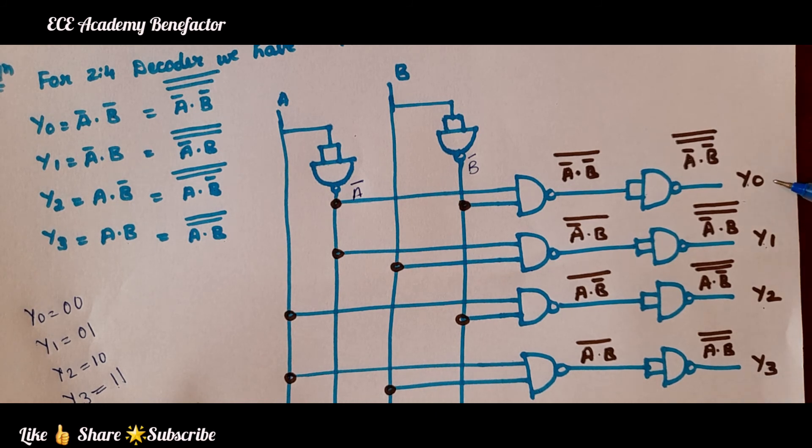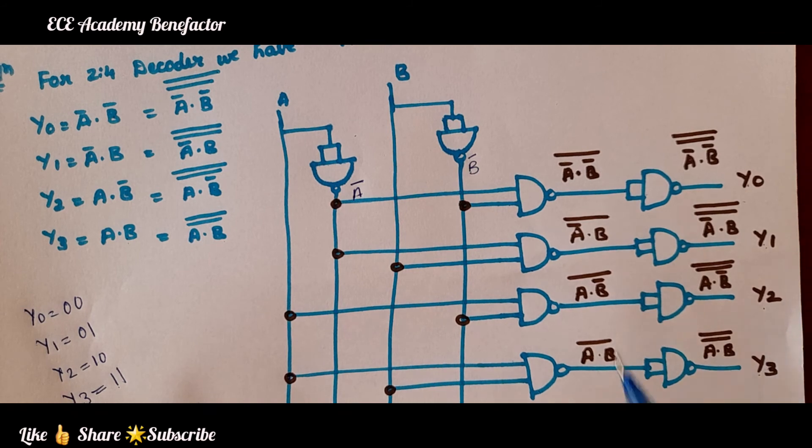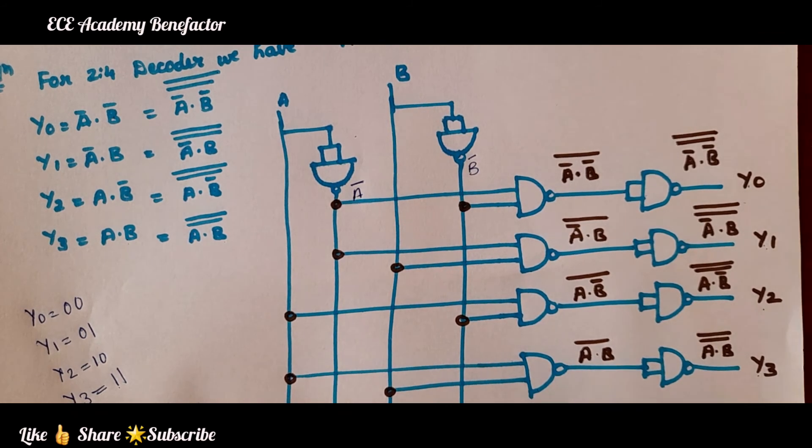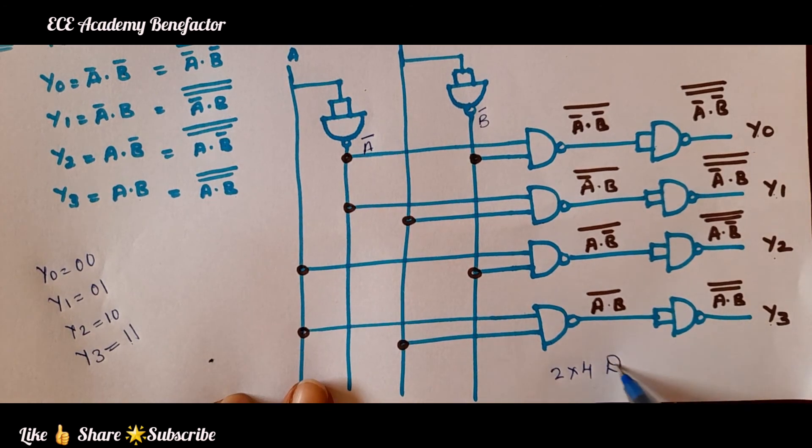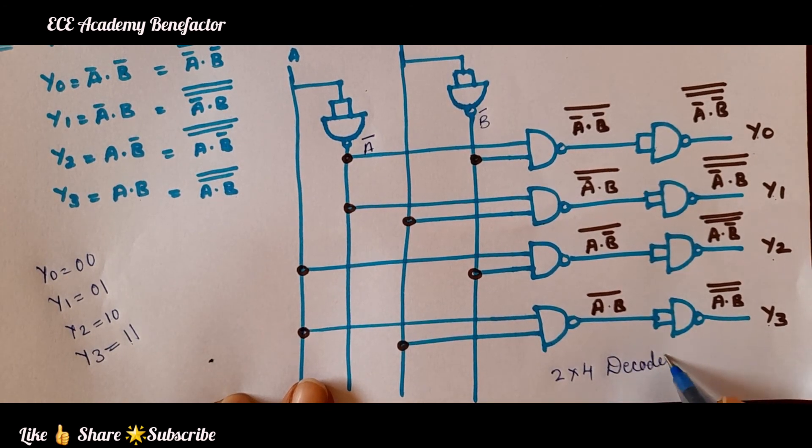In this way we generate y0, y1, y2 and y3. This is 2×4 decoder. This is a 2×4 decoder using NAND gates.